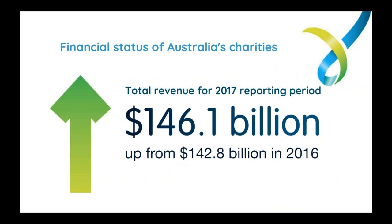The annual information statements also include financial information, which gives us a picture of the financial status of the sector. The sector's total revenue increased by $3.3 billion, which is quite significant year on year — it was the second year the charity sector reported an increase. This number will surprise a lot of people: $146 billion is the total revenue of the charity sector. It's the big ones that earn the big bucks, and that's represented in the figures.